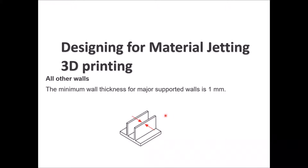If you have other kinds of walls — for example, two parallel walls supported by a base — the minimum wall thickness for those major supported walls should still be 1 millimeter or higher.